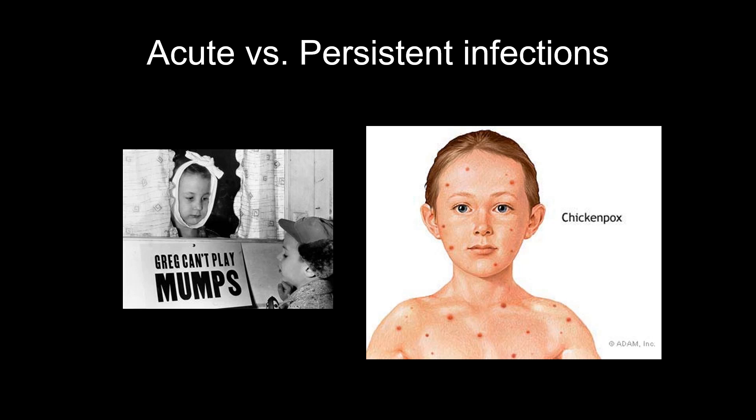Examples of acute infections: mumps, flu, and polio. Important note: acute infection means you clear the virus and stop shedding it — it doesn't mean you have no lasting effects. With polio, since it destroys nervous system cells, you clear the infection and no longer shed the virus, but the damage to spinal nerves is permanent. Whatever limbs got affected will never regain movement, depending on which spinal nerves were affected. The paralysis is permanent even though the infection was acute.